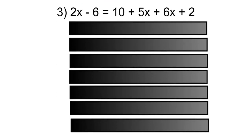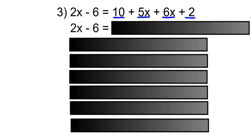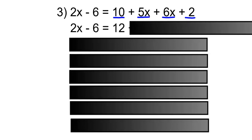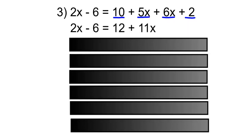In the last equation, there are no like terms on the left-hand side, but there are like terms on the right-hand side, so we'll begin with step one. The 10 and the 2 are like terms, and the 5x and the 6x are like terms. So the 2x minus 6 will stay the same. 10 plus 2 is 12, and 5x plus 6x is 11x.